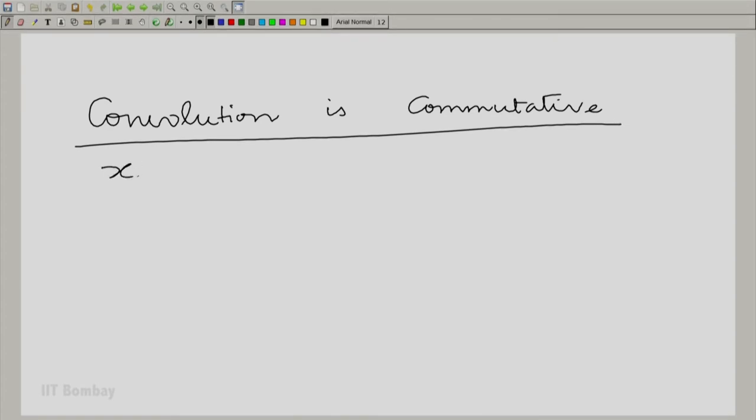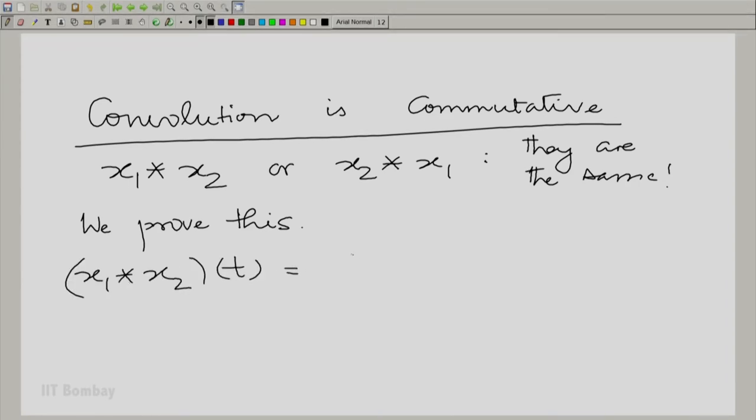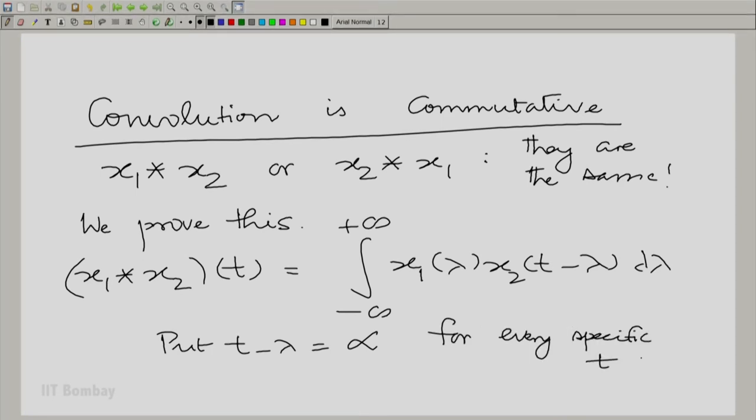It does not matter whether you are talking about convolving x_1 with x_2 or x_2 with x_1. They are the same thing. x_1 convolved with x_2 evaluated at t is integral x_1(lambda) x_2(t minus lambda) d lambda, integrated over all minus to plus infinity. Put t minus lambda as another variable alpha for every specific t. When you do this, lambda is t minus alpha and lambda equal to minus infinity gives alpha equal to plus infinity. Lambda equal to plus infinity gives alpha equal to minus infinity. Moreover, d lambda is minus d alpha.